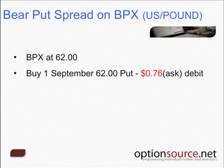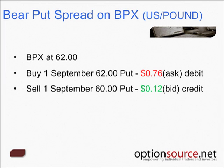If we break this strategy down to the mechanics: we're looking at the BPX sitting at 62, and we're going to buy one 62-strike put option, which costs us 76 cents. When I went into the market and looked at the ask price for these 62 puts, the market maker was saying if you want to buy this option right now, you're going to have to pay 76 cents — or $76 — to participate.